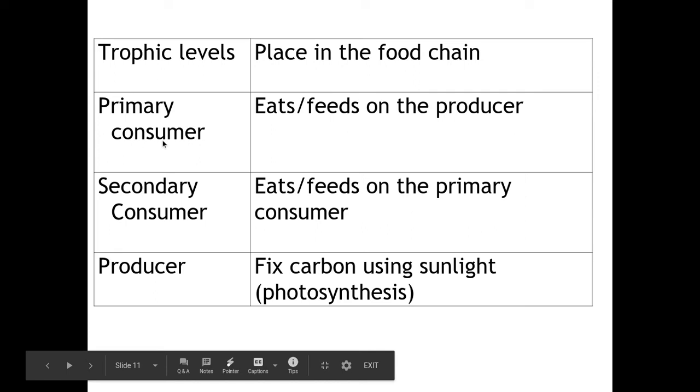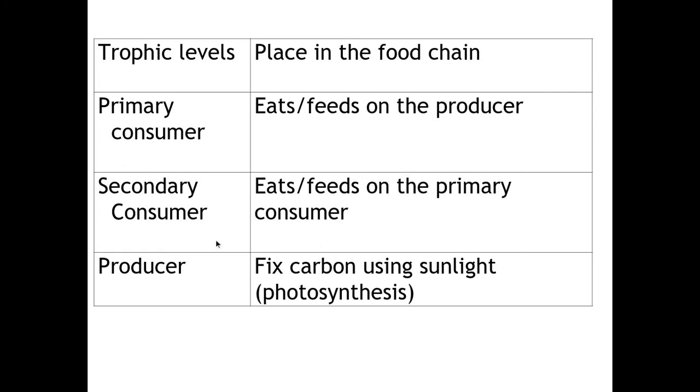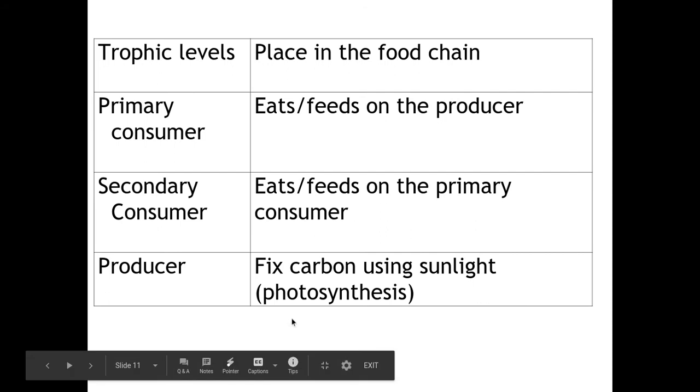We then have our primary consumer, which eats or feeds on the producer, our secondary consumer, which eats or feeds off the primary consumer. And we can also go up to our tertiary or quaternary consumer, depending upon the food web or chain.